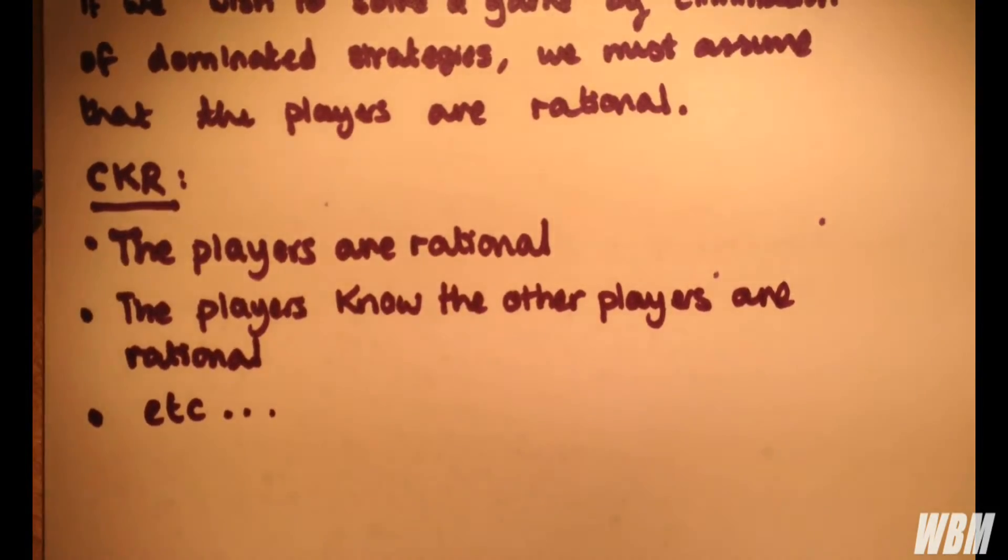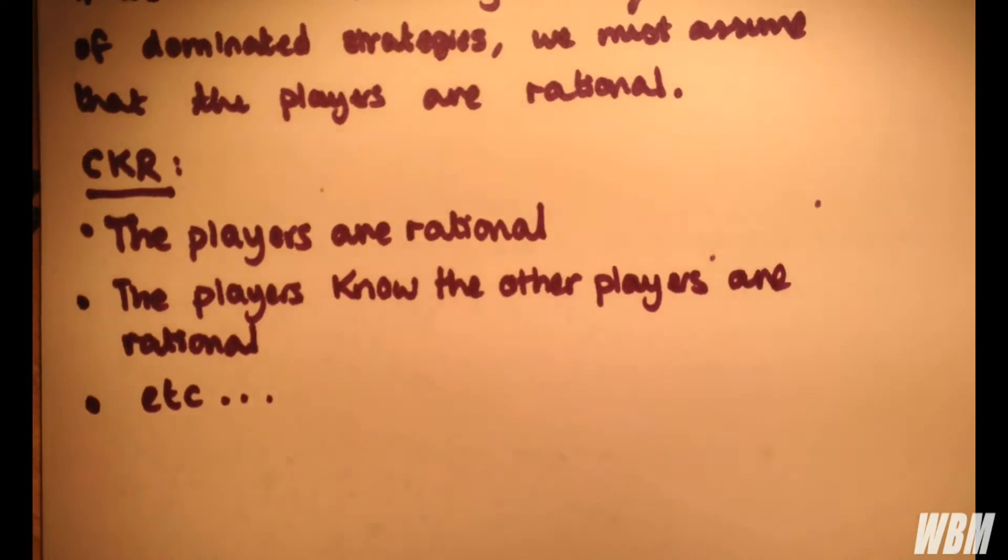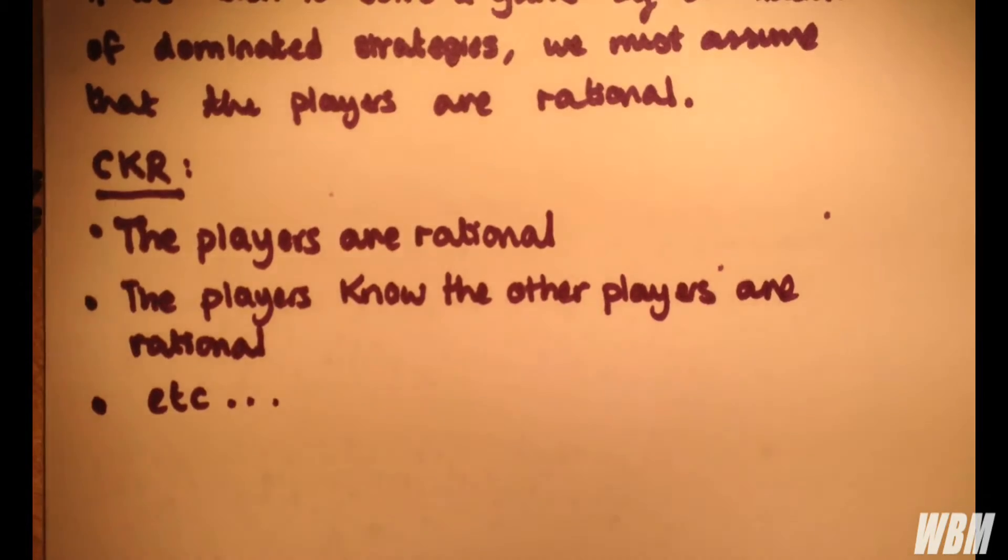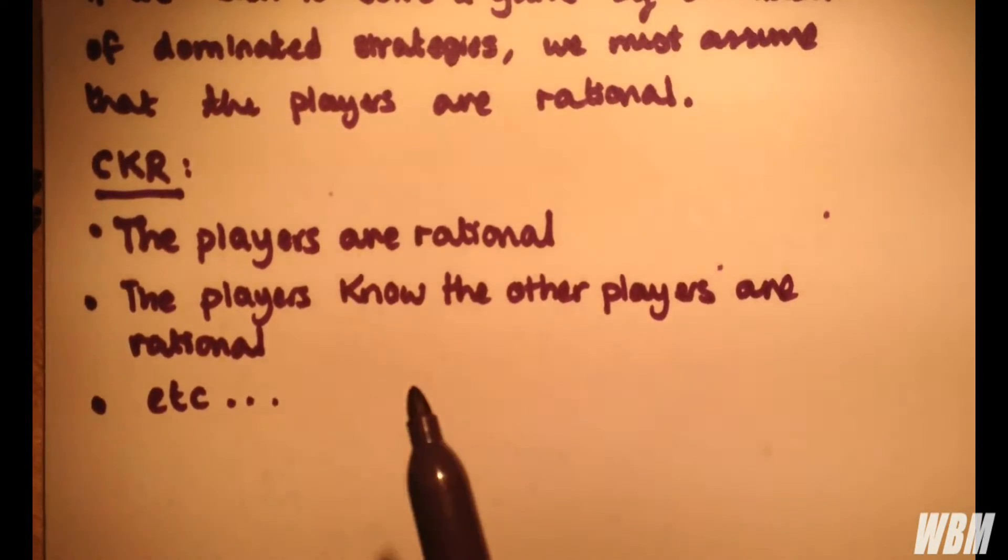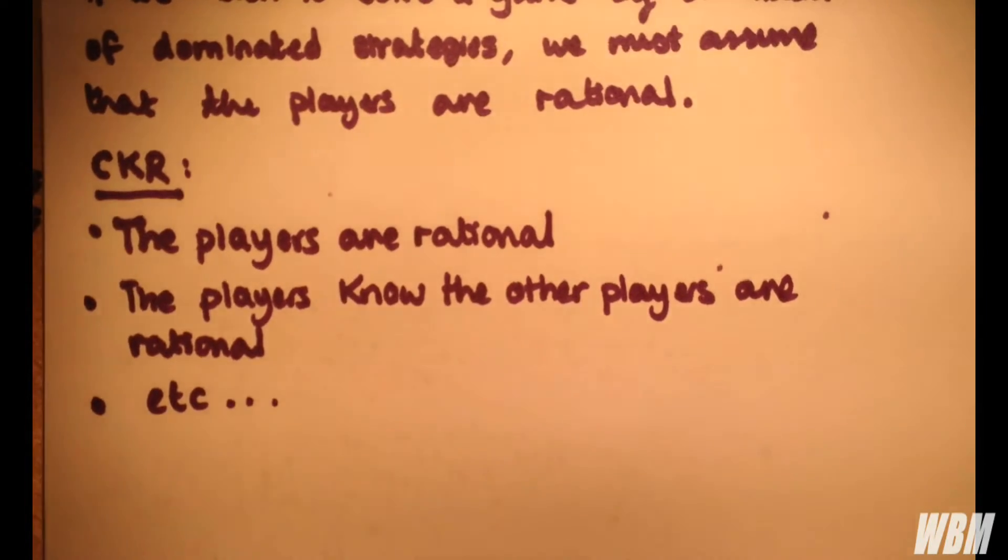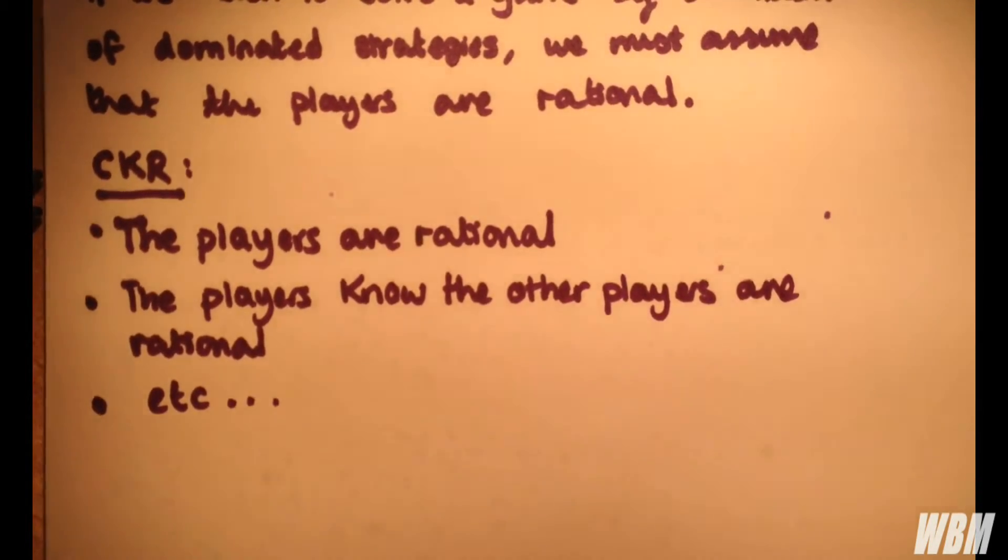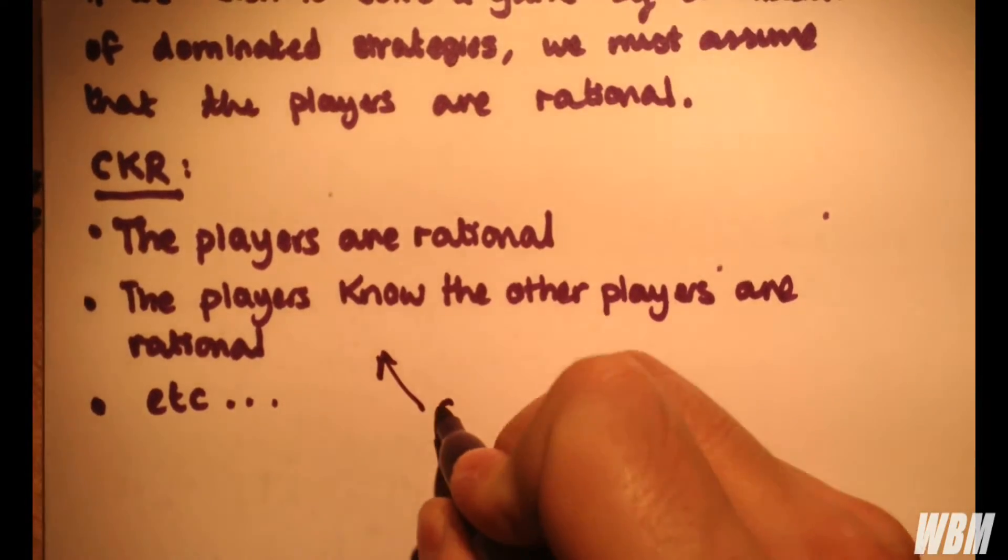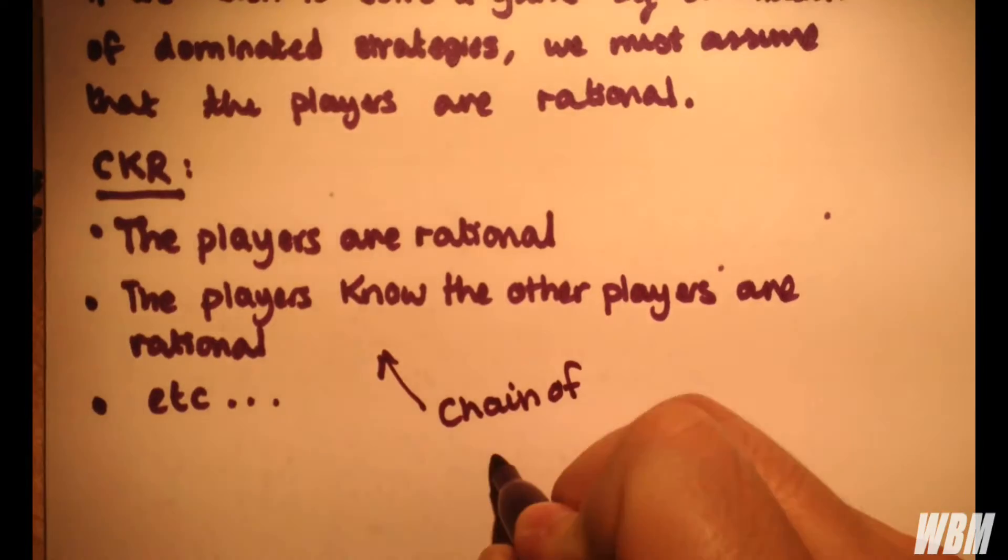Now, the common knowledge of rationality isn't just used in game theory. It's used in many areas of mathematics and other logical argument areas. Actually, a couple of years ago, they did research where they showed that this wasn't perhaps necessary for finding certain game theory events. But I think it's worth mentioning. Before I go on to show you an example of the elimination of dominated strategies, by the way we refer to this as a chain of assumptions.